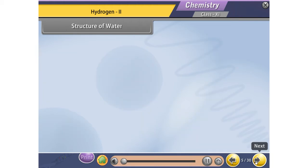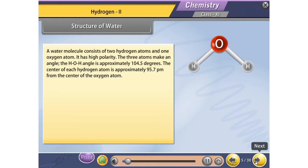Structure of water: A water molecule consists of two hydrogen atoms and one oxygen atom. It has high polarity. The three atoms make an angle. The HOH angle is approximately 104.5 degrees.